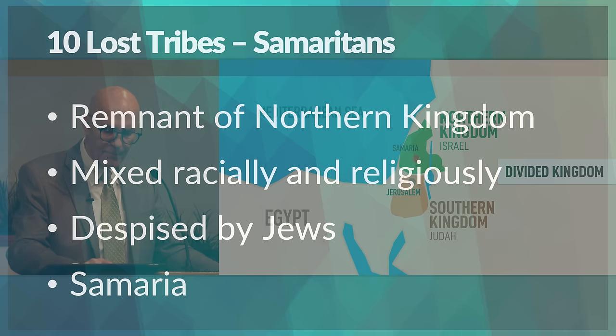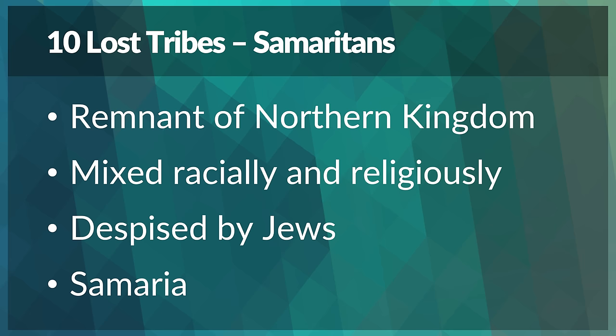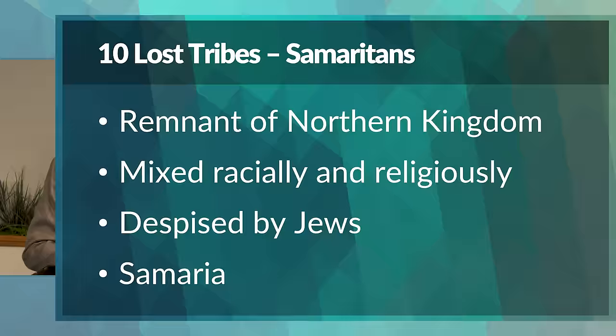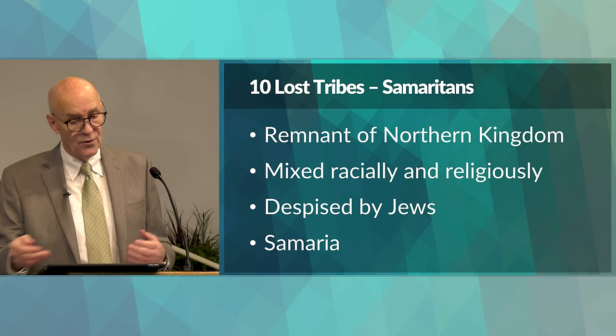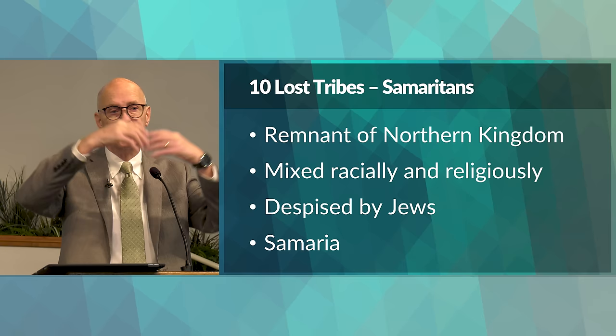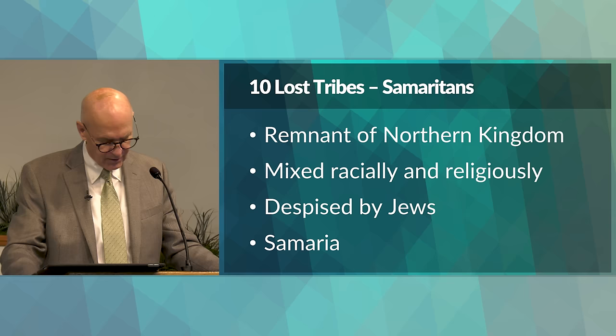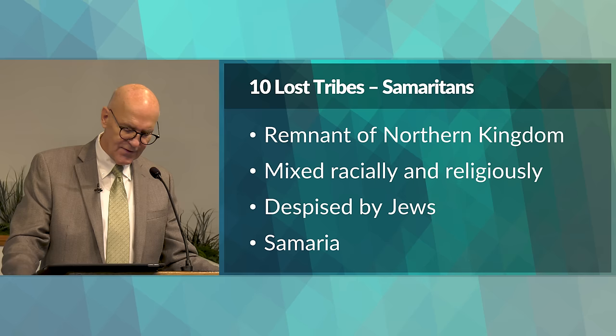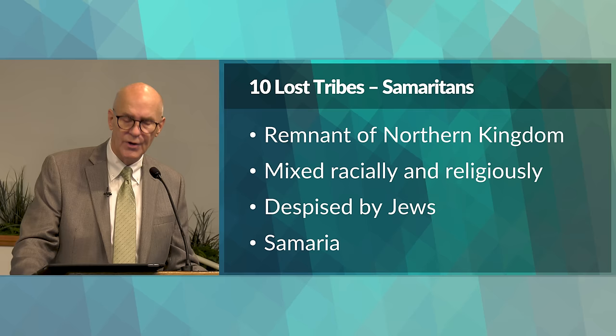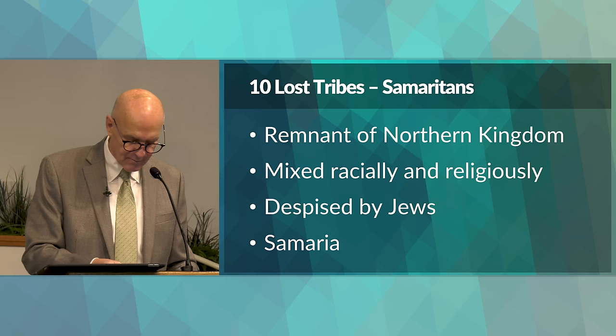The northern kingdom, because they were mainly absorbed by other cultures and religions, was never reestablished. They are referred to as the lost tribes of Israel — the 10 northern tribes, not all 12. They were scattered throughout the Assyrian Empire. Some returned to settle in their ancient tribal territories, but because they had mixed with other nations and pagan religions, they were no longer considered purely Jewish. They were referred to as Samaritans, after Samaria, the land and capital of the northern tribes.